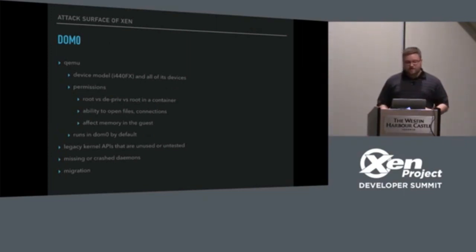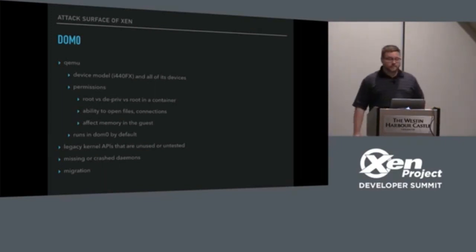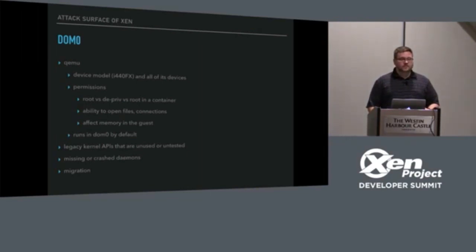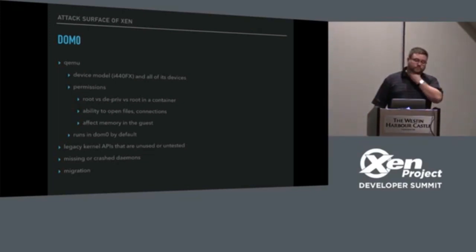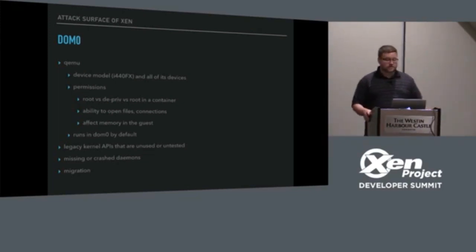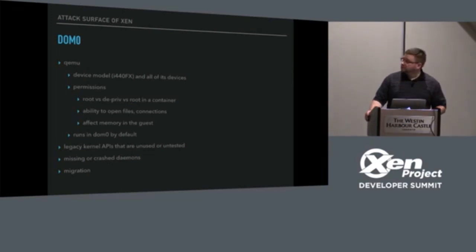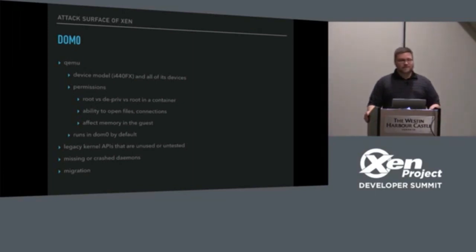Looking at some Dom Zero items: we've got QEMU, and a bulk of our CVEs over the years — or over the last year — has been QEMU related. Right now Xen is stuck on the legacy device model and all of its devices and all of its legacy bits. People remember the floppy disk controller being used as an exploit vector — how many people have floppies in their laptops now.